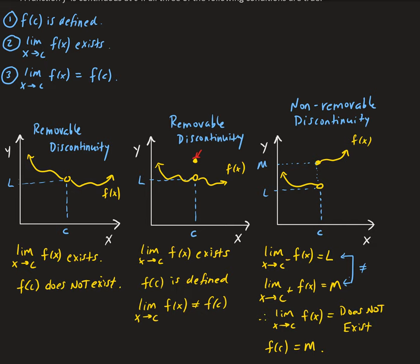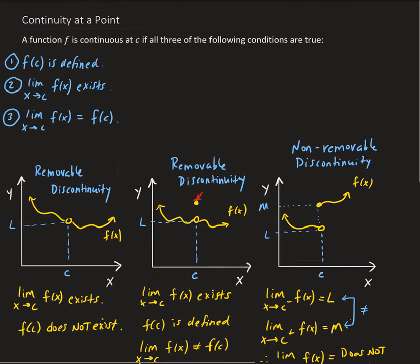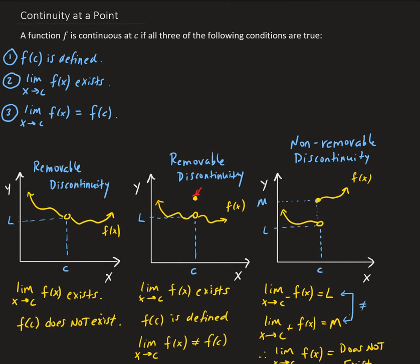You can also have a non-removable discontinuity if a function has a vertical asymptote, which is also considered non-removable because those are cases where the limit is unbounded. So remember: the function at that point must be defined, the limit of the function as x approaches c must exist, and the limit of f as x approaches c must be equal to the function evaluated at c.